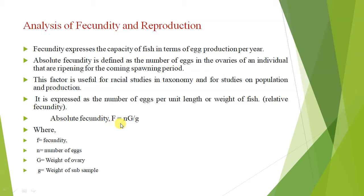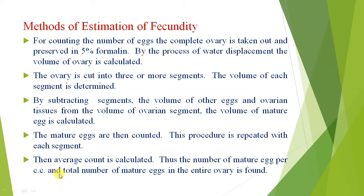For example, F = N·G / g. For counting the number of eggs, the complete ovaries are taken out and preserved in 5% formalin. By the process of water displacement, the volume of ovaries is calculated. The ovaries are cut into 3 or more segments and the volume of each segment is determined. By subtracting the volume of other eggs and ovary tissue from the volume of the ovary segment, the volume of mature eggs is calculated. Then mature eggs are counted, the process is repeated, and the average count is calculated, giving the total number of mature eggs in the ovary.